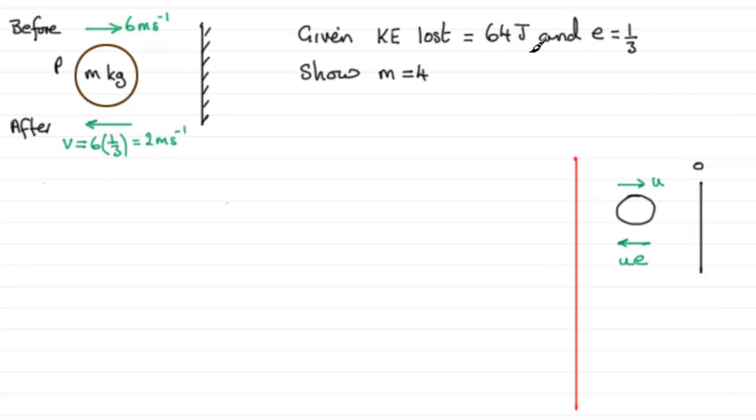now that we've done this we're in a good position to find out what M is because we can just return now to the kinetic energy lost so since the kinetic energy lost equals the kinetic energy before the impact minus the kinetic energy after the impact